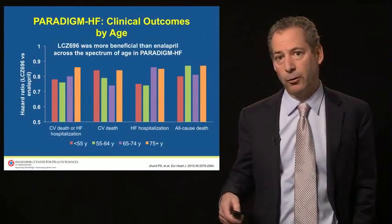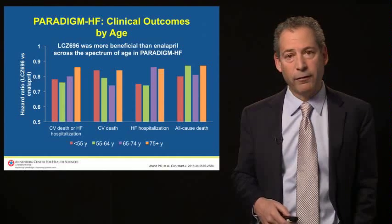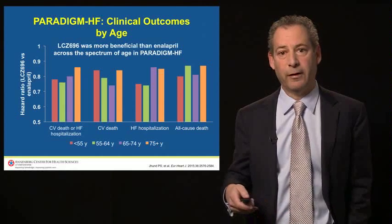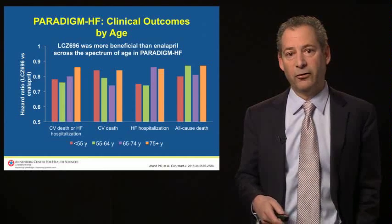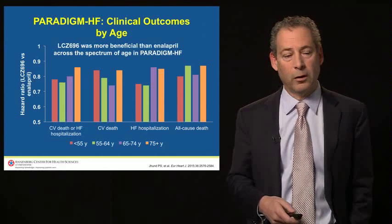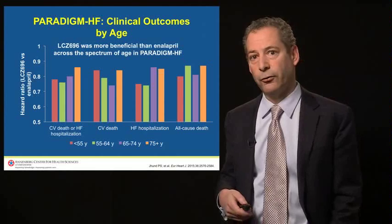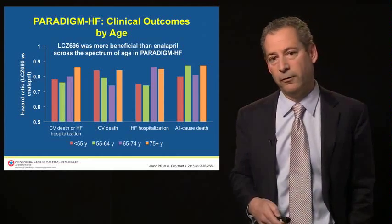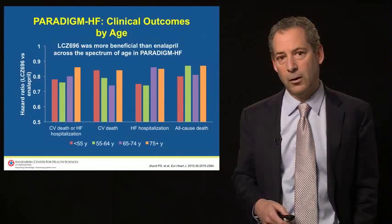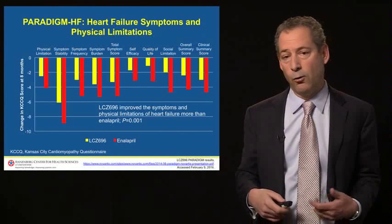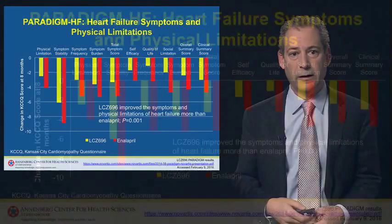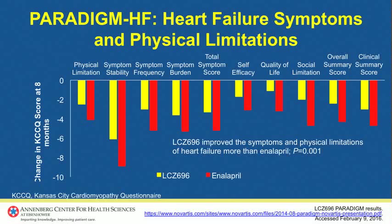We looked at a number of different subgroups, and one question often asked is whether this drug will benefit people at the extremes of age. An analysis recently published in the European Heart Journal shows that patients benefit to the same extent whether they're less than 55 years old or even over 75 years old, suggesting this benefit covers the full spectrum of age. We also found that virtually all domains of the Kansas City Cardiomyopathy Questionnaire are improved in patients receiving Secubitril-Valsartan compared to those receiving Enalapril, indicating improvements in symptoms, physical limitations, and overall quality of life.